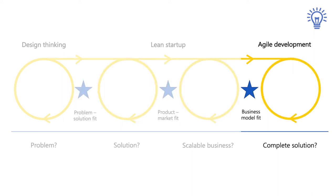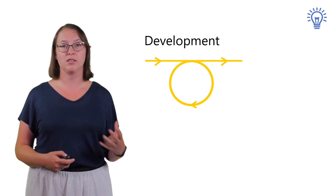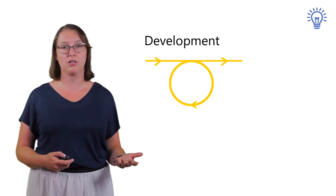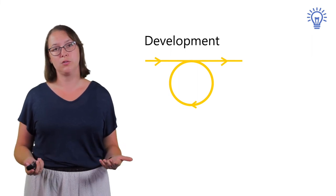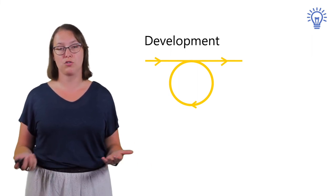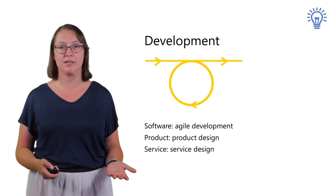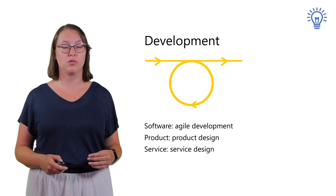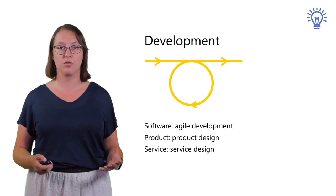And then finally, we go to the last method, which is about developing your whole solution. It is important that you pick a development process that is in line with the lean startup process. Because you need to make small changes quite often in lean startup, it is important that the development process is able to do this. Which development process you need will depend on the type of product or service you are offering. If you are offering software, you will probably use agile development methods like Scrum or Kanban. If you are building a physical product, you will use one or more product design techniques. And if you are building a service, you will use service design.